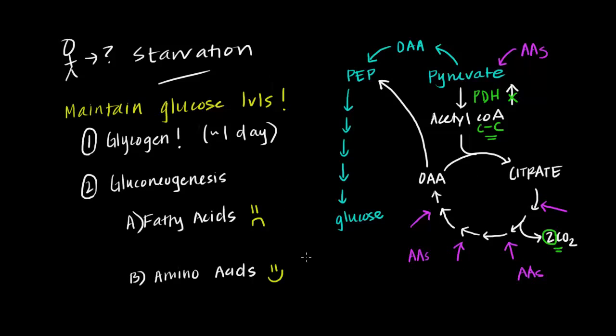Now a couple minor points: it turns out that there are some fatty acids, specifically odd chain fatty acids, that can contribute in some way to the Krebs cycle like these amino acids. Some portion of these odd chain fatty acids can be converted to intermediates in the Krebs cycle and be used for gluconeogenesis. But on the whole we generally consider fatty acids not to contribute to gluconeogenesis because we think about acetyl-CoA being the primary product of fatty acid synthesis.